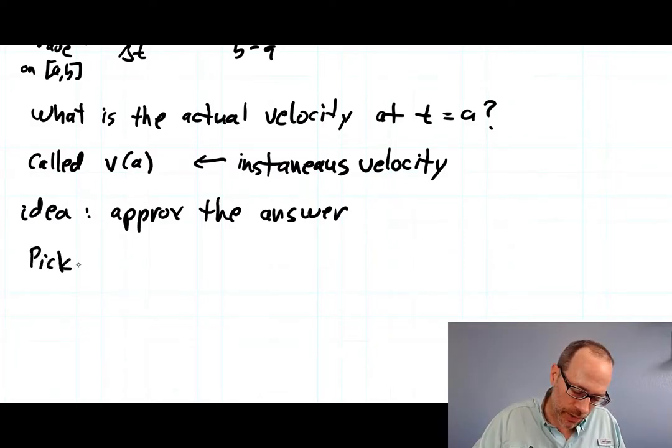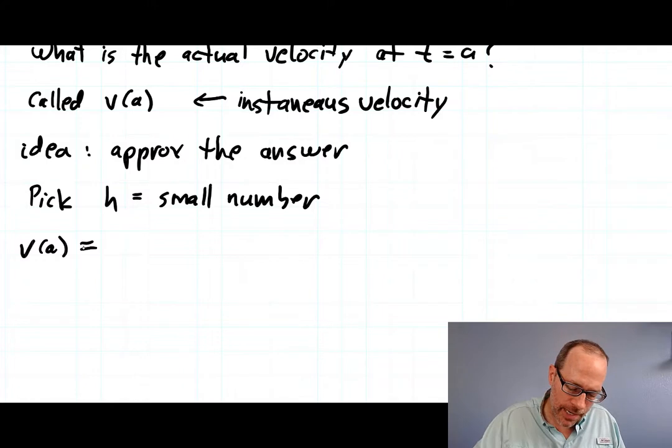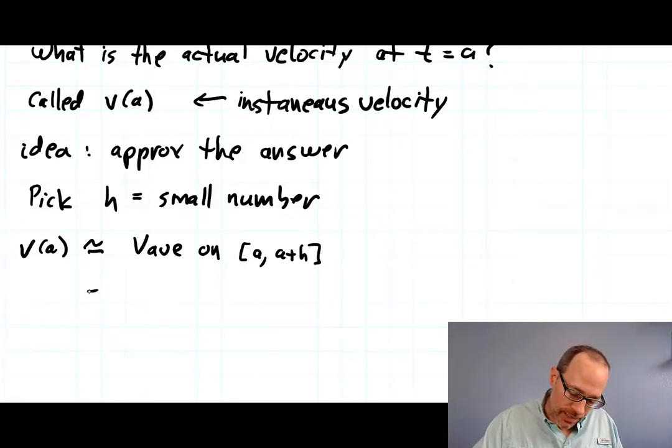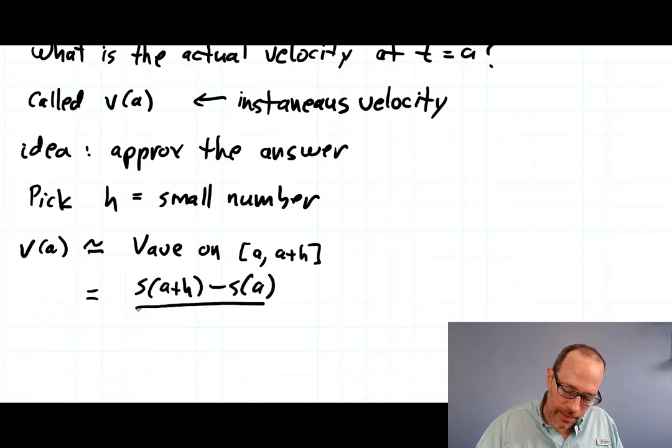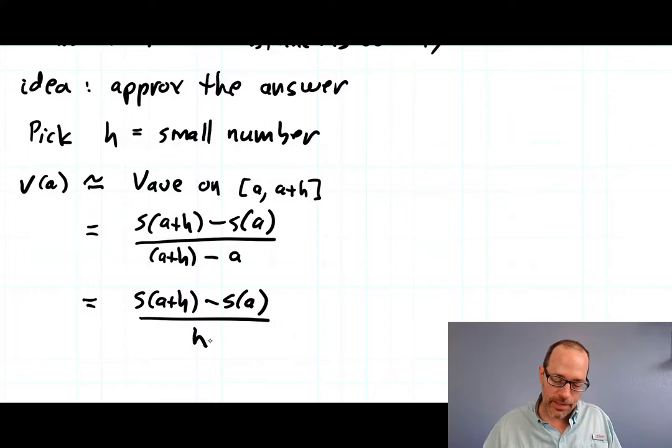So you pick some small number and then you figure that the instantaneous velocity at time a should be approximately the average velocity on the interval a to just a and a little bit, a and a small number. So this average velocity we said was s at a plus h minus s at a all over the change in time a plus h minus a. So the bottom simplifies a bit: s of a plus h minus s of a all over h. And so we figure the smaller h is, the better this approximation is.